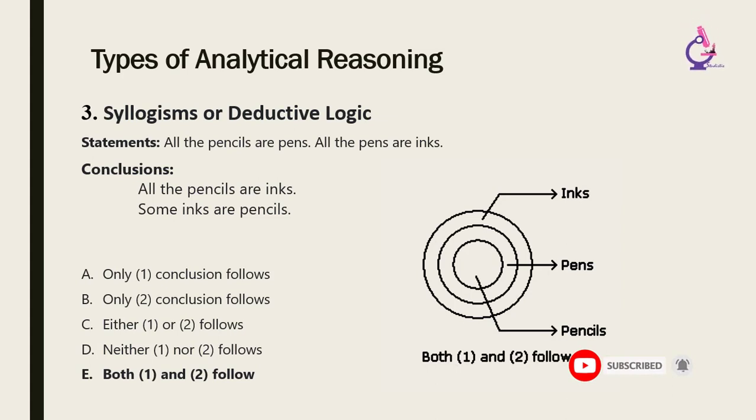A syllogism is a three-part logical argument based on deductive reasoning, in which two premises are combined to conclude. So long as the premises of the syllogism are true and the syllogism is correctly structured, the conclusion will be true.